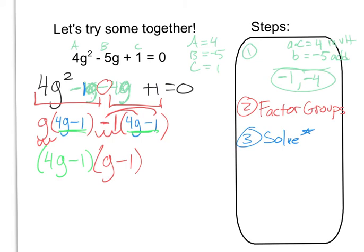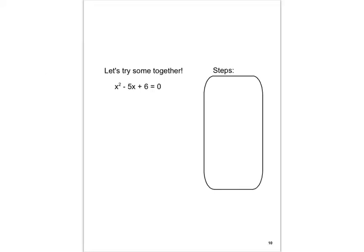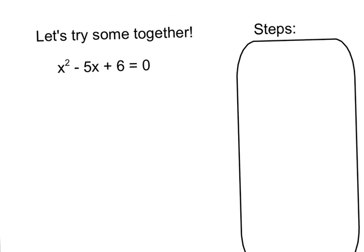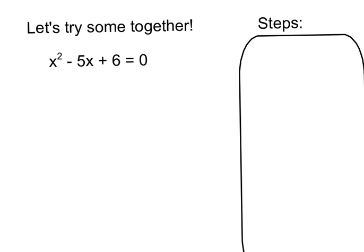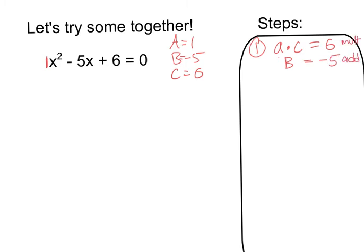We're just practicing this factoring stuff — if you're asked to solve you can go further. Next up: x squared minus 5x plus 6. This is really 1x squared, so a is 1, b is negative 5, and c is 6. So a times c is 6, and b — what we're adding up to — is minus 5. We need to multiply to 6 and add to negative 5, so both must be negative.